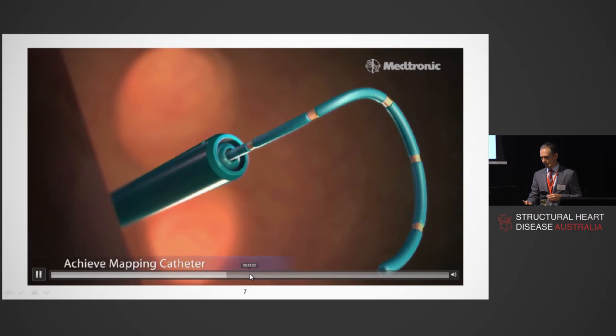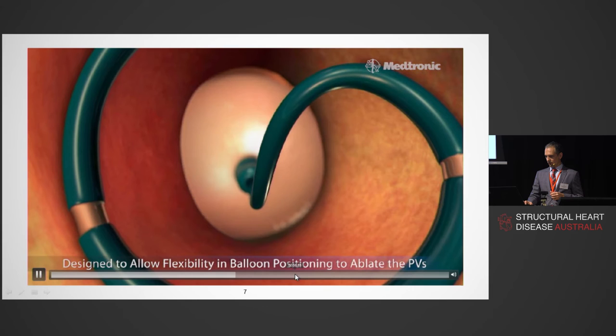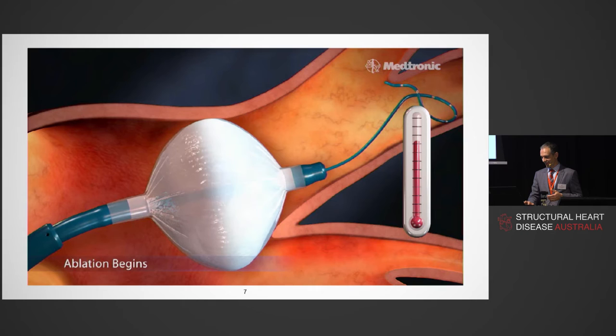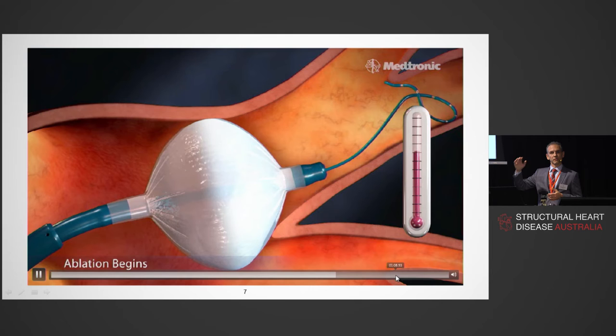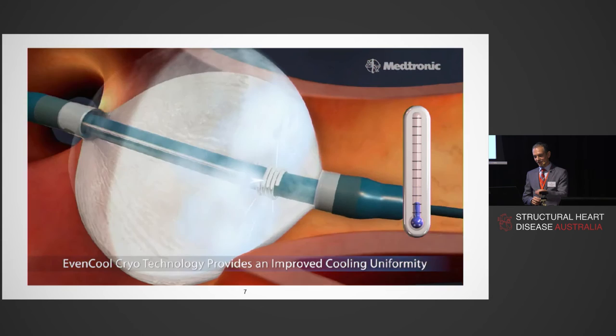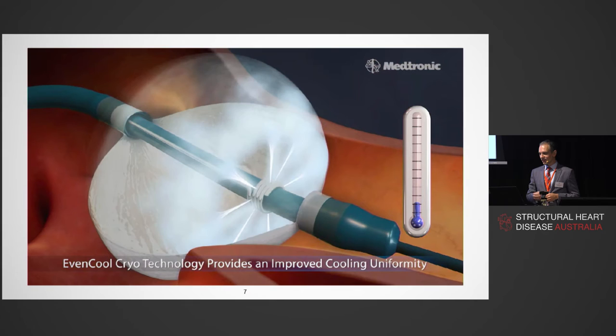The balloon plugs the vein and delivers freezing energy to that region. You can see the temperature drops where the balloon contacts the pulmonary veins — that is where the energy is delivered, creating electrical disconnection.